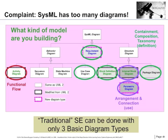My answer to the complaint that there are too many diagrams is: you can do traditional systems engineering work — building system block diagrams, building internal connections, showing how equations relate to various properties, organizing your model, and doing initial functional analysis — with only three kinds of diagrams. And that doesn't seem too onerous.